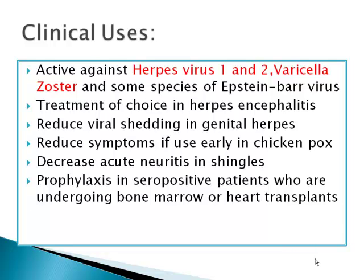The clinical uses of acyclovir: it is active against herpes virus 1 and 2, varicella-zoster, and some species of Epstein-Barr virus. It is the treatment of choice in herpes encephalitis. It reduces viral shedding in genital herpes. It reduces symptoms if used early in chickenpox. It decreases acute neuritis in shingles. And it is used in prophylaxis in immunocompromised patients.